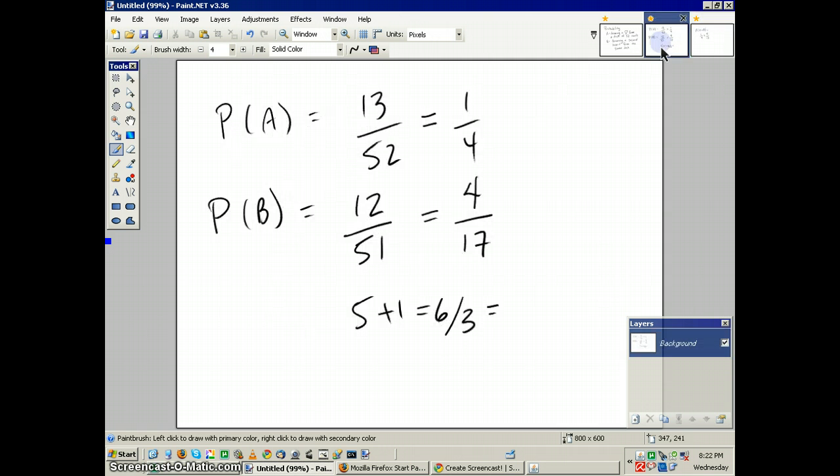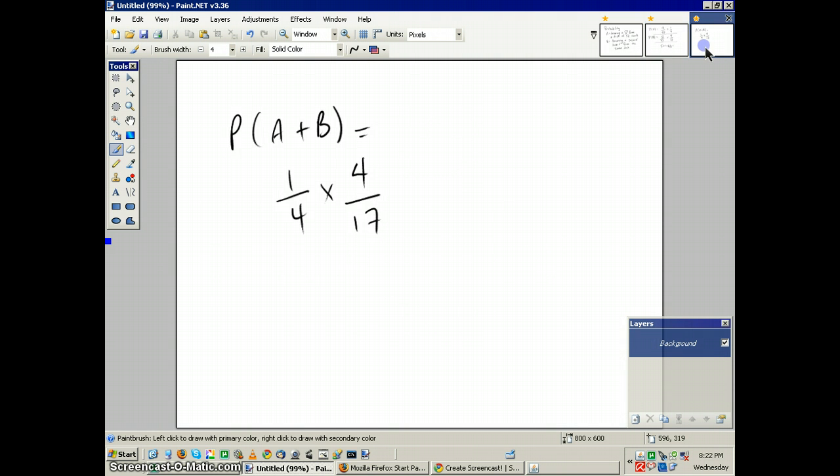Now, remember, that's where we got that. Here's probability A. Here's probability B. So we take those two probabilities and multiply them. And through the magic of multiplication, we see that we can cancel the 4 and the 4 on both sides.